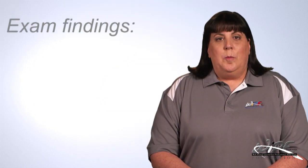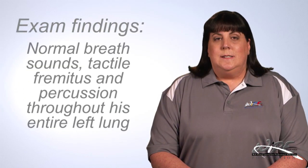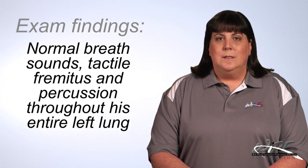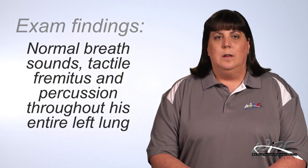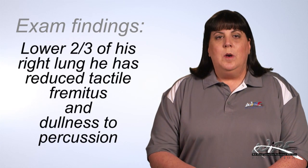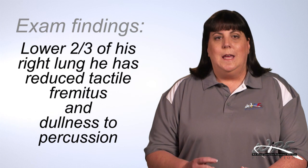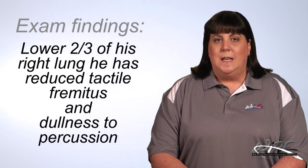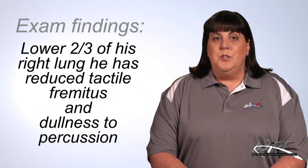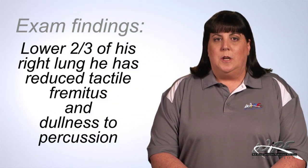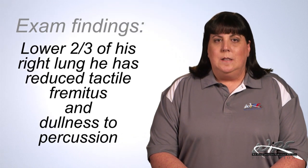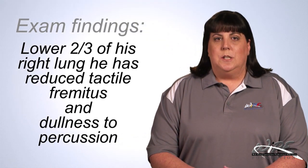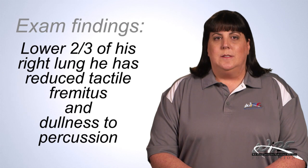Now we've got another patient. Same thing on the left — normal breath sounds, tactile fremitus, and percussion throughout his entire left lung. But now, on the lower two-thirds of his right lung, he has reduced tactile fremitus and dullness to percussion. Decreased tactile fremitus and dullness to percussion — what do you think in this scenario?